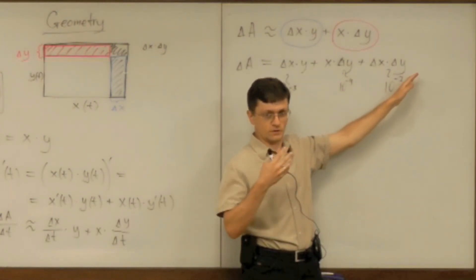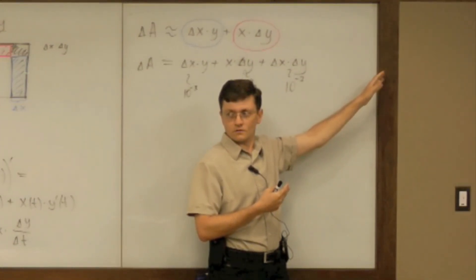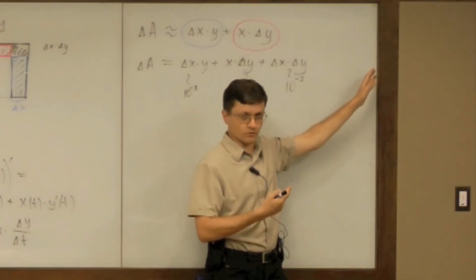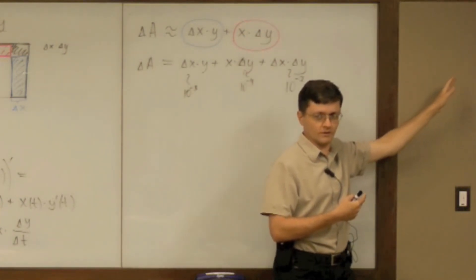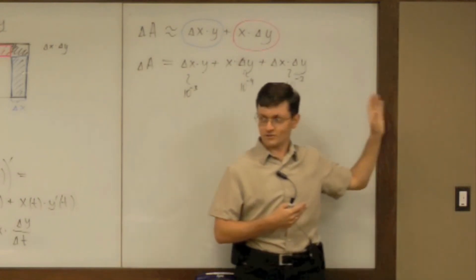You will have a quadratic term following that contributing less but contributing much more than a cubic term that follows, which contributes much more than fourth degree term, fifth degree term, and it goes forever.